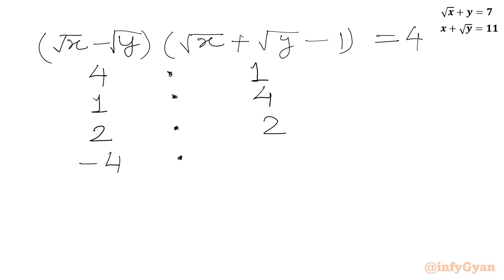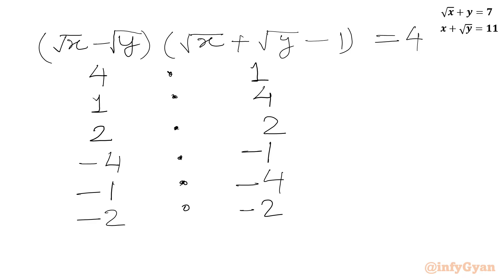Now we can think about negative factors also. Negative 4 multiplied with negative 1 gives product 4. Minus 1 times minus 4 gives product 4. Minus 2 times minus 2 also gives product 4.